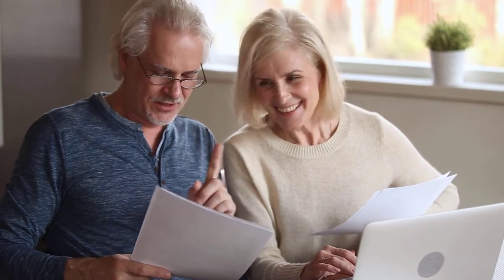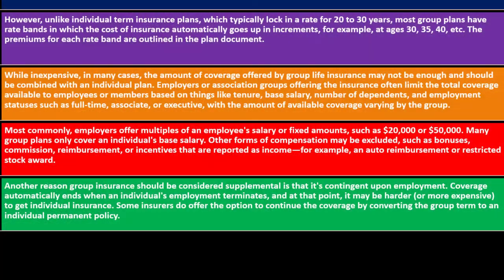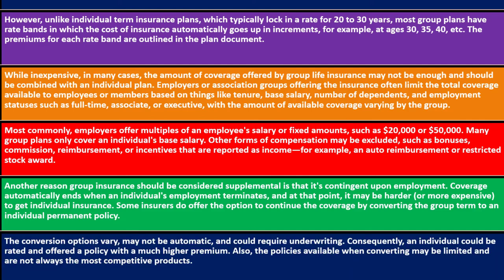Therefore, it might be good to have insurance through the company but also have an individual term plan so that if you leave that employer and lose the group coverage, you still have coverage in place. Some insurers offer the option to continue coverage by converting the group term to an individual permanent policy, but conversion options vary, may not be automatic, and could require underwriting — meaning the individual could be rated and offered a policy with a much higher premium. Also, the policies available when converting may be limited and not always the most competitive products.